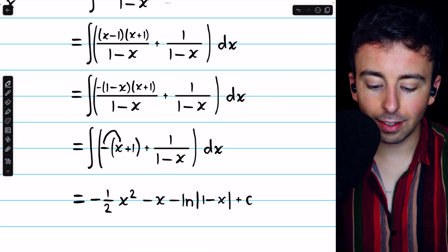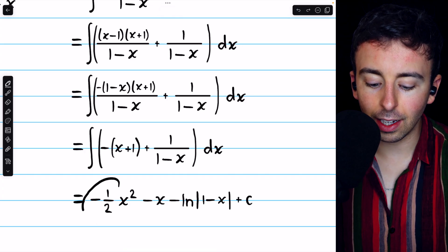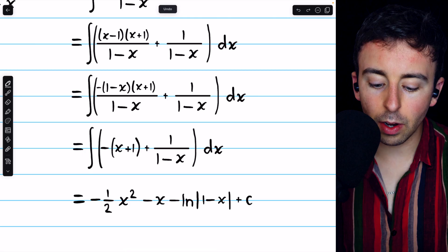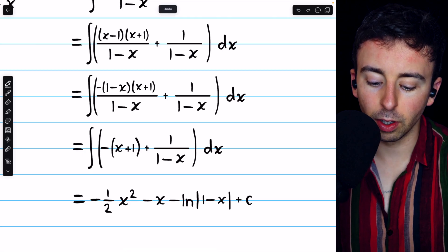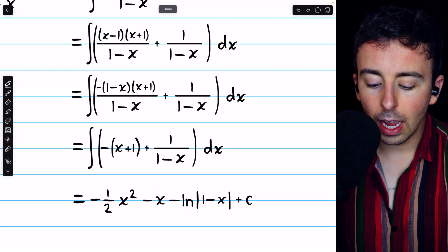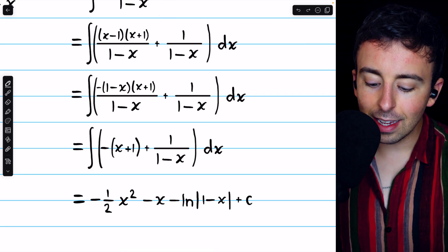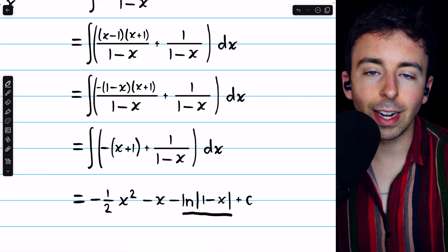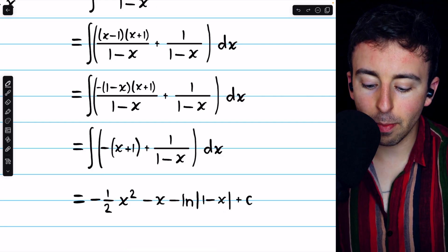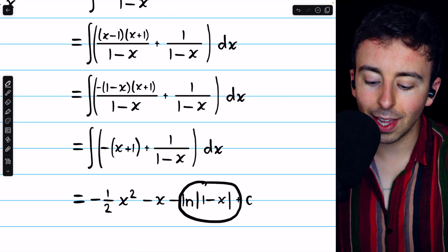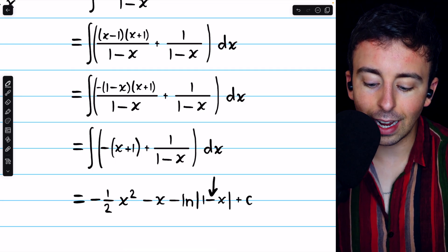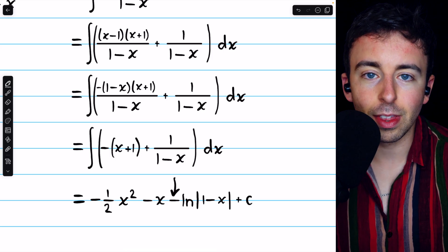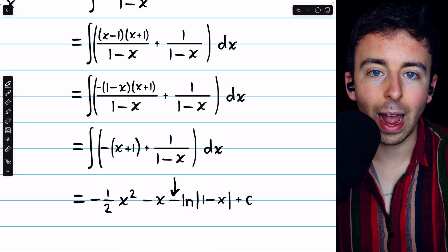This is negative x, and the integral of that is negative 1 half x squared, just using the power rule. And then we also have negative 1. The integral of that is negative x. And then the integral of 1 over 1 minus x is the natural log of the absolute value of 1 minus x. But then you have to remember, if we took the derivative of this, the chain rule would give us a factor of negative 1. And so we need to throw in a negative that would undo that, which is why we have that subtraction there.